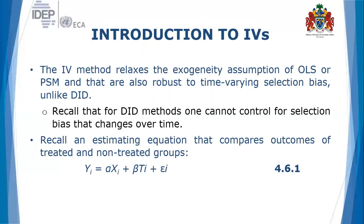The instrumental variable regression method relaxes the exogeneity assumption of ordinary least squares or propensity score matching. These instrumental variables are also robust to time-varying selection bias. This is unlike the difference-in-differences method from the previous lesson, where an evaluator cannot control for selection bias that changes over time.